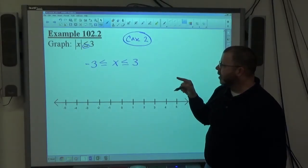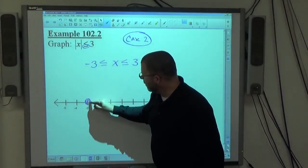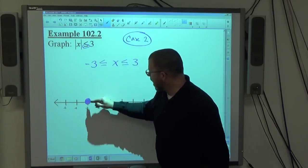When we're graphing an inequality with equals attached to it, we're going to put a filled in circle at our boundary number, so negative 3 and positive 3.